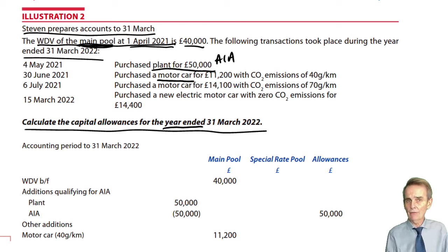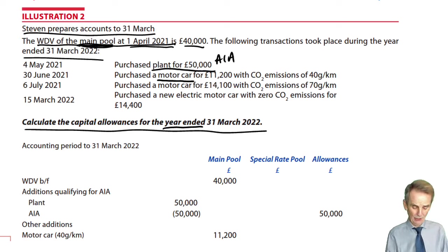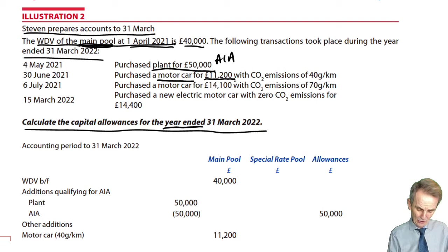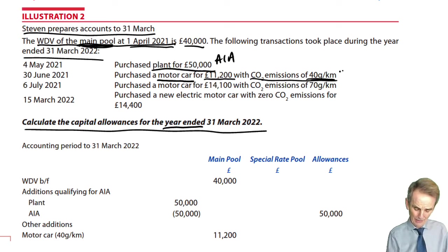The emission levels are provided to us on our rates and allowances. The cutoff figure was 50 grams per kilometre in terms of whether it's main pool or special rate pool. Here we've got a motor car purchased for £11,200 with CO2 emissions of 40 grams per kilometre — below the 50 limit — so that's allocated to the main pool, and as a car there's no AIA available. We've then got a car costing £14,100 with CO2 emissions of 70 grams per kilometre, which has gone above that 50 grams per kilometre limit, and therefore goes to the special rate pool.